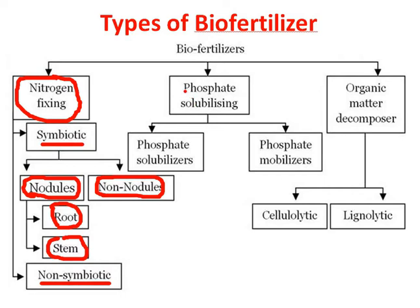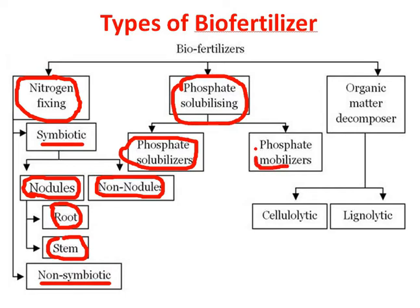Similarly, when we talk about phosphorus — microbes are not fixing it, but phosphorus is available in the soil in an insoluble form. So microbes solubilize it, converting the non-soluble form to a soluble, uptakeable form. That is what we call phosphate solubilizer. Another group is the phosphate mobilizer, moving phosphorus from one level to another for plant uptake.